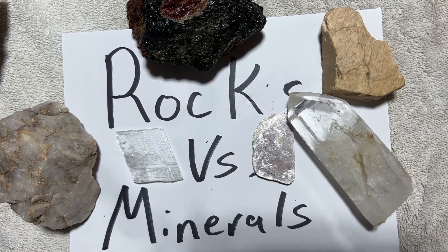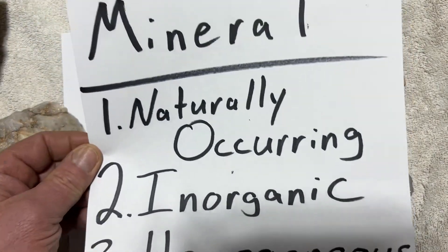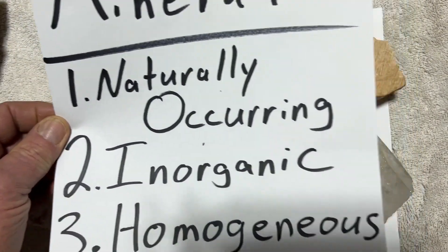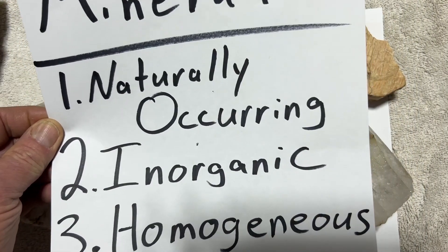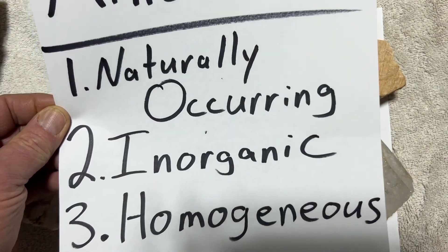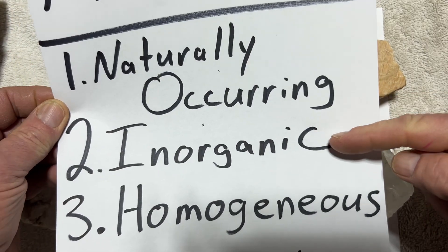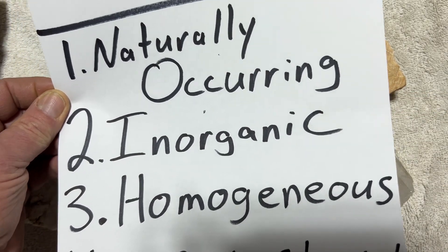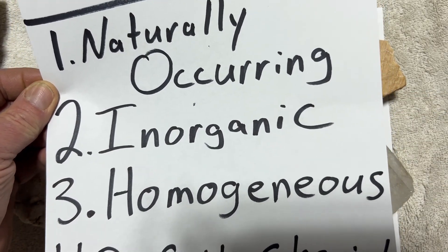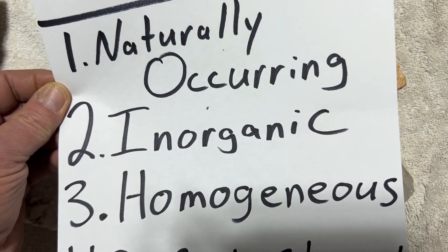What's the difference between a rock and a mineral? Well, minerals are naturally occurring, meaning they're found in nature, not man-made. The second criteria is that they're inorganic — they're not containing carbon and they do not come from a living thing.